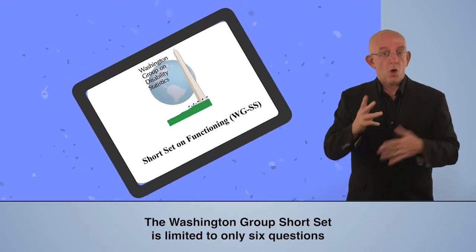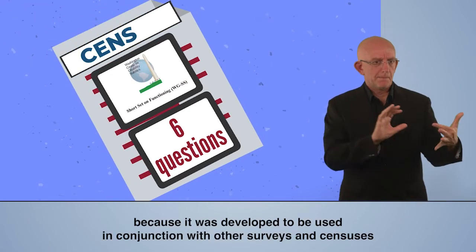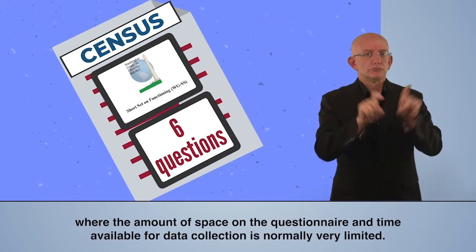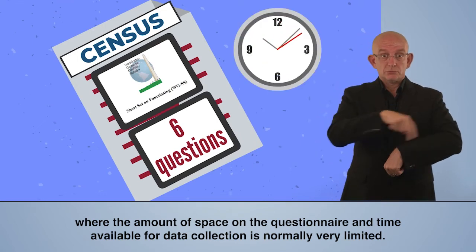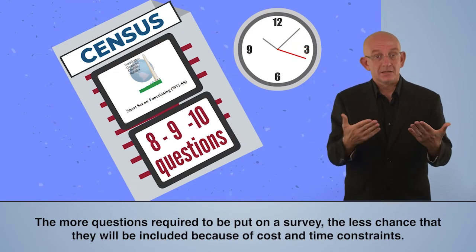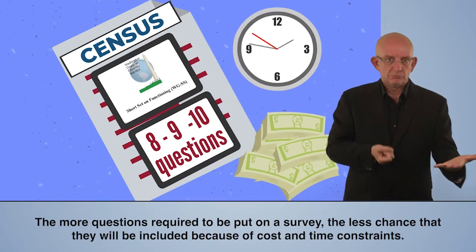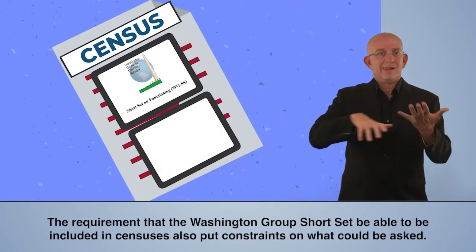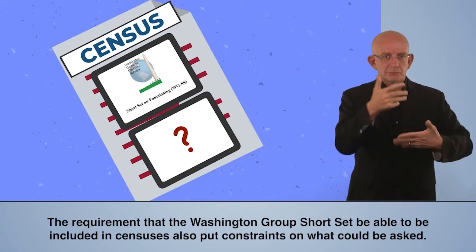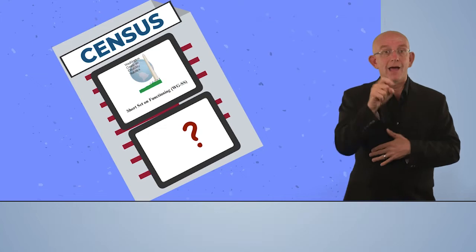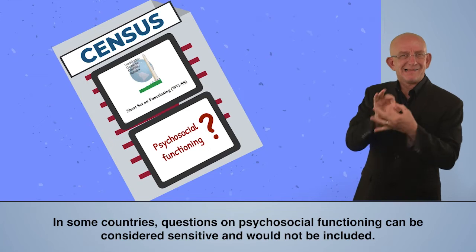The Washington Group Short Set is limited to only six questions because it was developed to be used in conjunction with other surveys and censuses where the amount of space on the questionnaire and time available for data collection is normally very limited. The more questions required to be put on a survey, the less chance that they will be included because of cost and time constraints. The requirement that the short set be able to be included in censuses also put constraints on what could be asked. In some countries, questions on psychosocial functioning can be considered sensitive and would not be included.